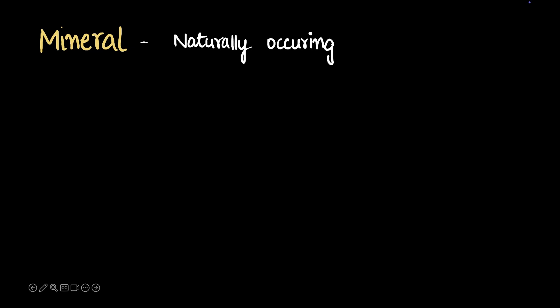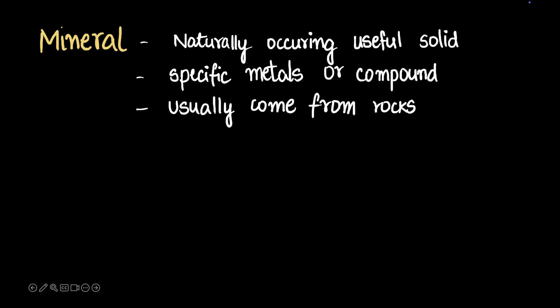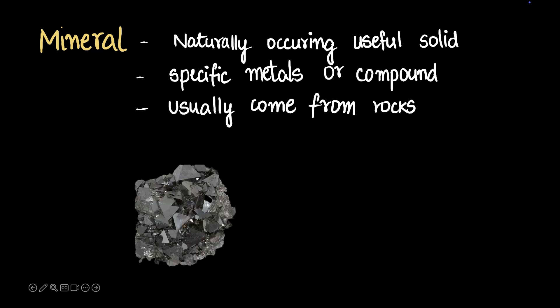Let's begin by discussing minerals. A mineral is a naturally occurring useful solid. A mineral has specific metals or compounds which are useful to us, and they usually come out of rocks. An example of a mineral is magnetite — magnetite is where we get our iron from.